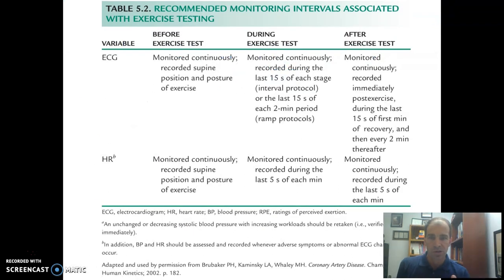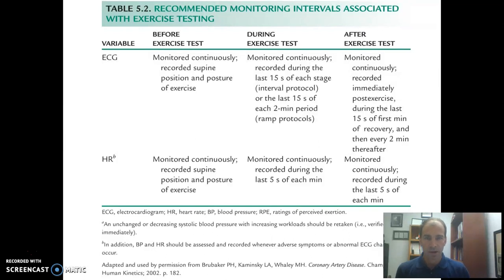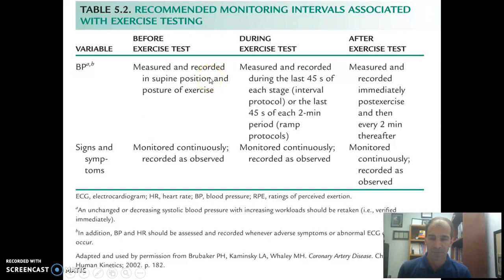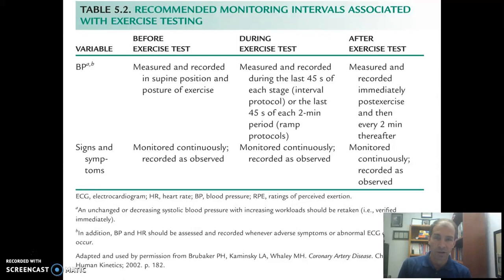Your book goes through each of these a little more specifically as far as how we typically monitor these. The ACSM has some guidelines regarding EKG monitoring — it should be continuous; you don't just do it every few seconds. You especially want to get readings right before you increase to a new stage, and then after exercise you want to clearly monitor because the post-exercise window is where we often see a high number of potential cardiac events. Heart rate monitoring should also be continuous and accurate. Blood pressure is definitely a challenge when the individual is walking and moving, but we do everything we can to get the most accurate assessment before, during, and after exercise — especially during the most difficult part.